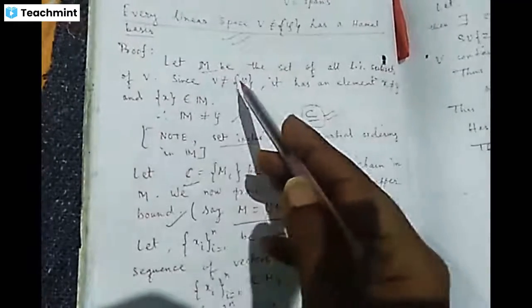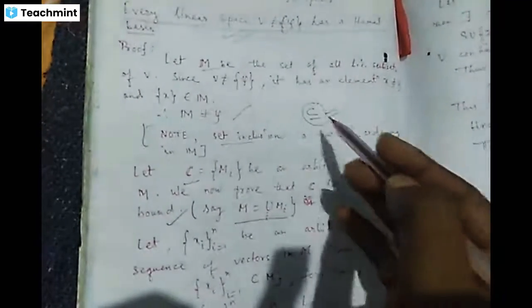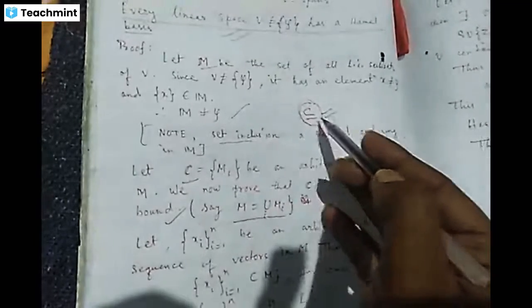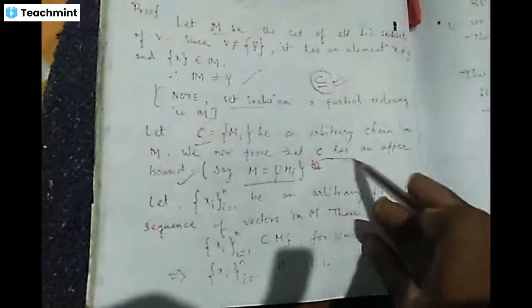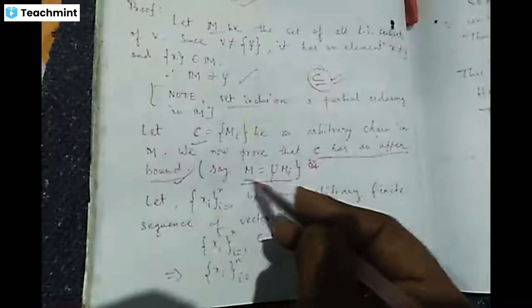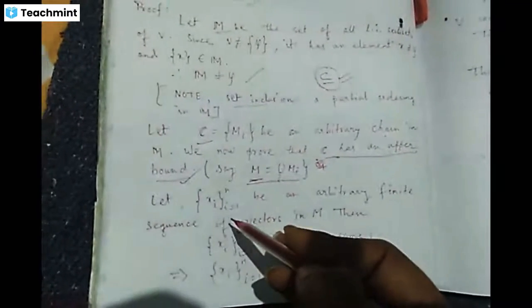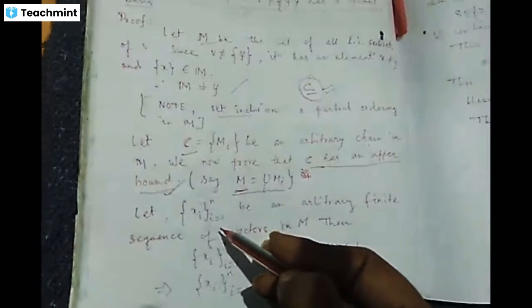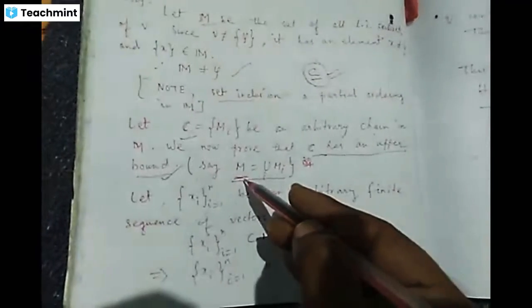Set inclusion will work under M. To prove that C has an upper bound equal to M*, we consider an arbitrary finite sequence of vectors x_i, where i runs from 1 to n, in M* — that is, a finite sequence of vectors in the union of M_i.